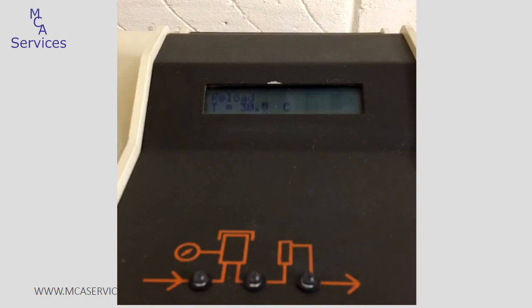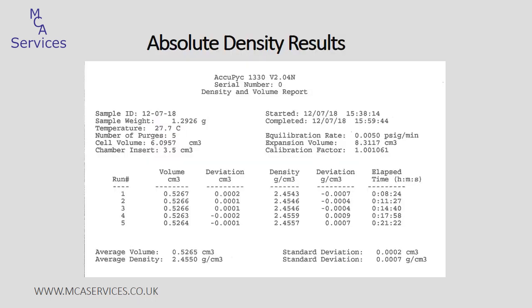The fifth run has finished and the analysis is now over, giving us a printout of the results. The header information at the top shows critical information such as the sample mass and the temperature at which the analysis was undertaken. Underneath that, we get a summary of results for each of the five runs, showing both the volume and the density calculated from it.